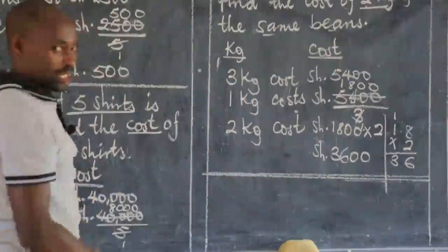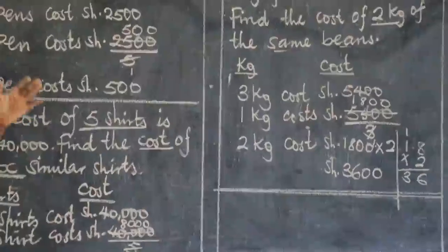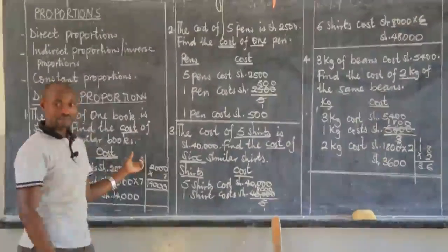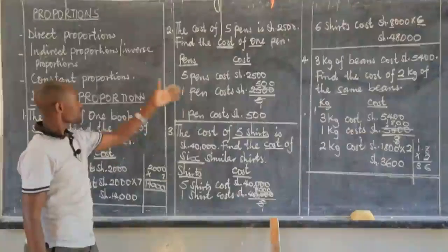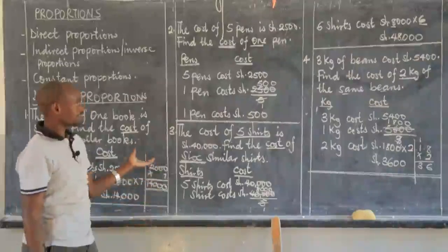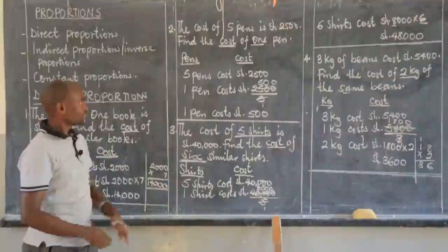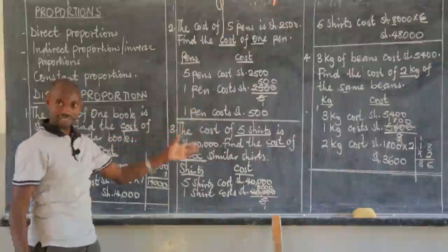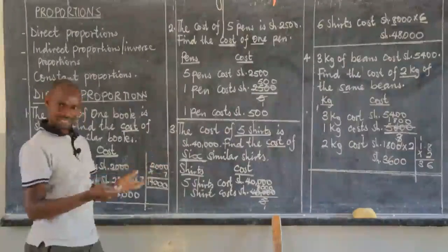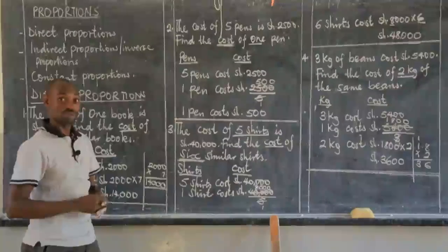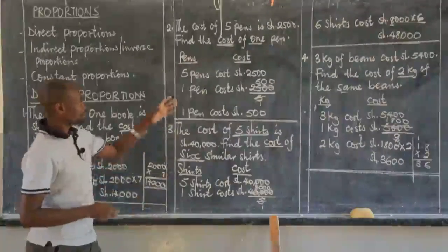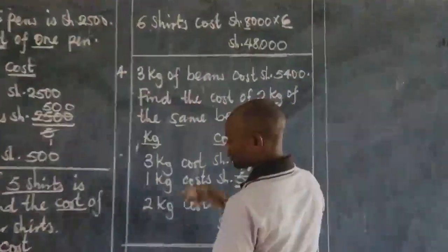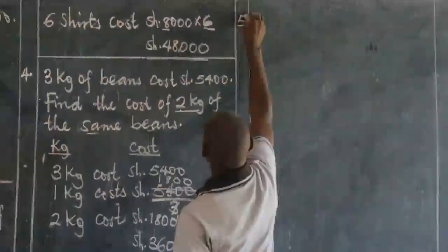If you have been very keen, I have used one method. But we have always told you that a class that uses only one method in mathematics is a dead class. So do we have another method we can apply here to get the same answers? Yes. In example number five, I am going to use an alternative method so that you can compare — which one is simpler?